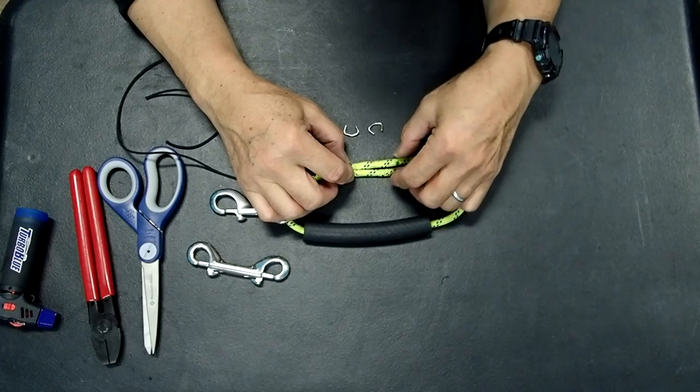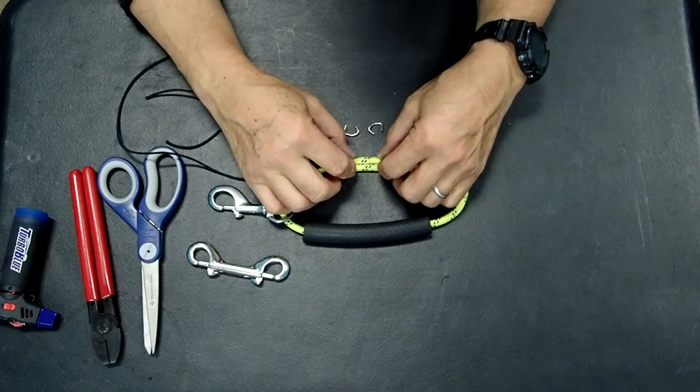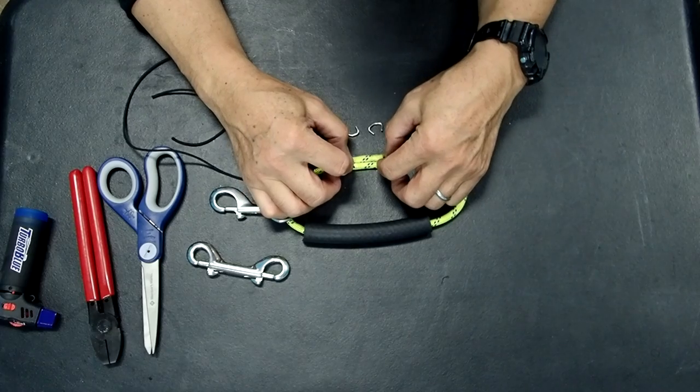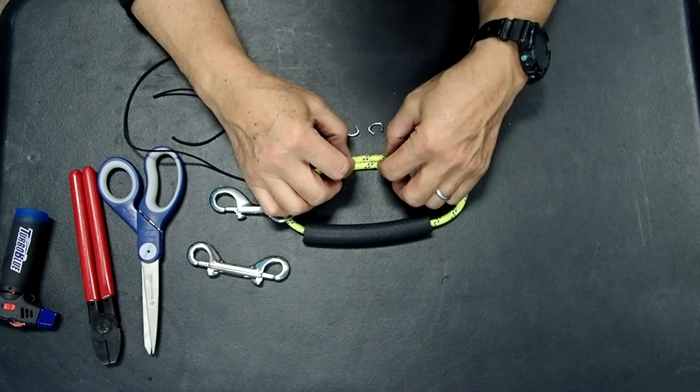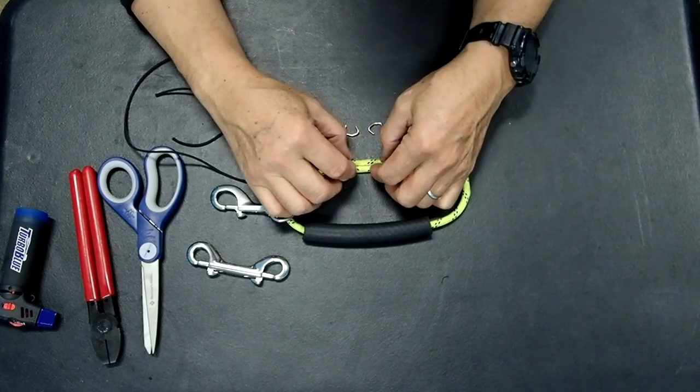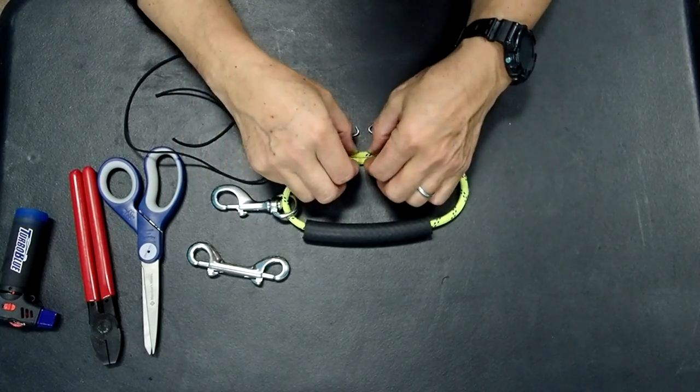You could also sew this with like maybe 20 stitches I've done that in the past or you can use little tiny wire ties. Little tiny wire ties are probably not sufficiently reliable so if you don't have anything else that might be an option but it's much better to use something permanent.